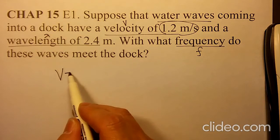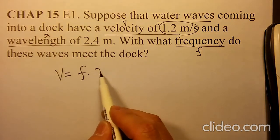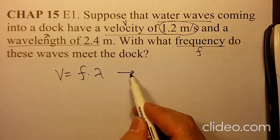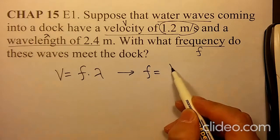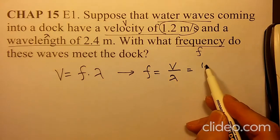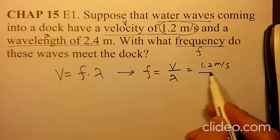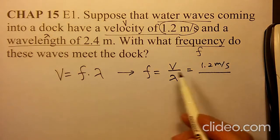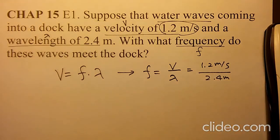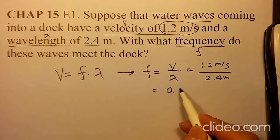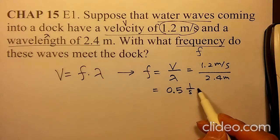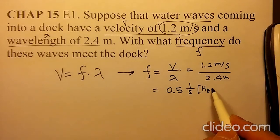Velocity can be defined as F times lambda. So in order to get your frequency, it is velocity divided by lambda. Velocity is given as 1.2 meters per second, and your lambda, the wavelength, is 2.4 meters. Then you will get frequency as 0.5, one over second, or hertz.